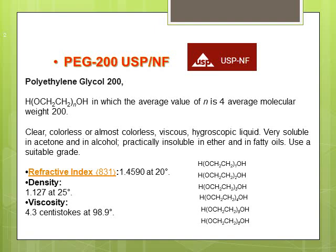In the case of PEG 200, the average number of monomers is four. It is a heterogeneous mixture — it could be a mixture of polyethylene glycol with one, two, three, four, five, six, or more monomers, but the average molecular weight is 200, consisting of an average of four monomers. The USP describes refractive index, density, and viscosity for this excipient.